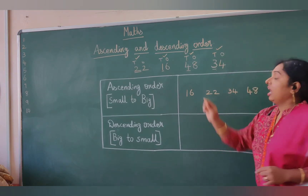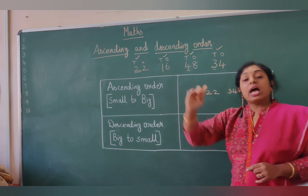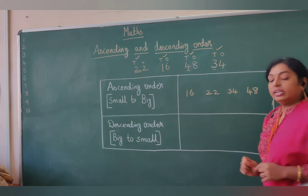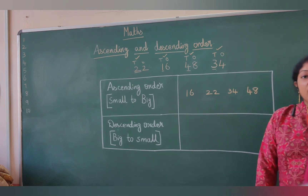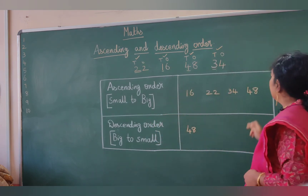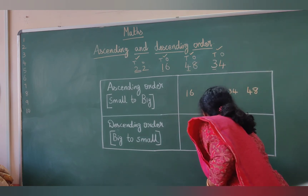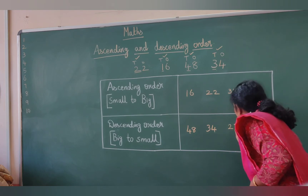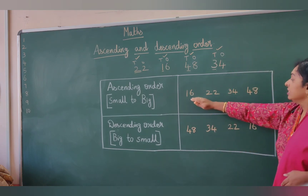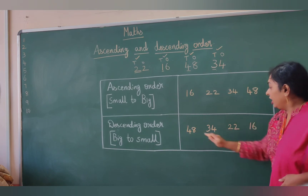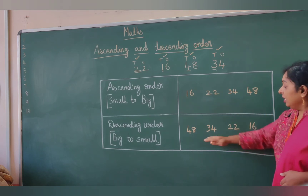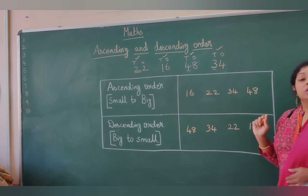I am looking at the numbers in the tens place and arranging them in sequence. The descending order is comparatively very simple. Let us write 48 first because it is the biggest number. After that, we have 34, then 22, and then 16. So in ascending order: 16, 22, 34, 48. In descending order: 48, 34, 22, 16.